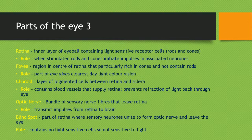The retina is the inner layer of the eyeball containing light-sensitive receptor cells known as rods and cones, and its role is to initiate impulses in associated neurons when stimulated. The fovea is a region in the retina that is particularly rich in cones, does not contain any rods, and is the part of the eye that gives the clearest daylight colour vision.